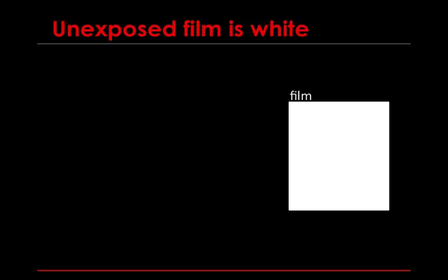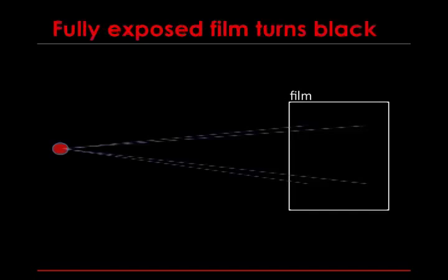Unexposed film is white. Whether it's an old-school hardcopy film or a digital film using a digital X-ray machine, when it's unexposed and has received no X-ray beams, it's white. Fully exposed film turns black. So if your X-ray source — that red dot there on the left — sends X-ray beams to the film and there's nothing in the way, then the image, when it's developed, will be black.